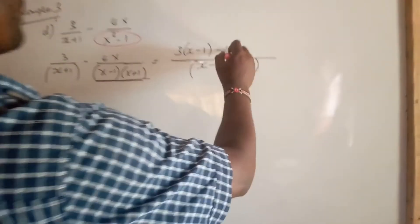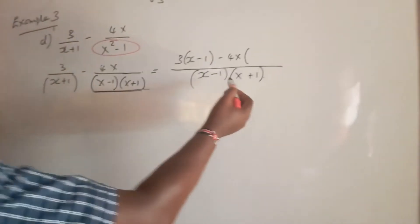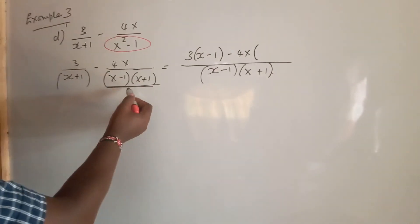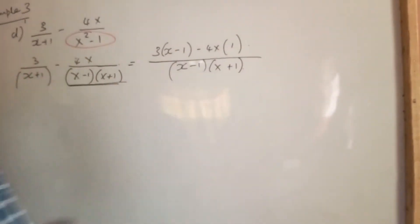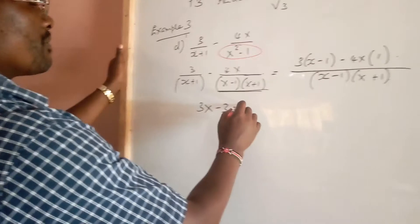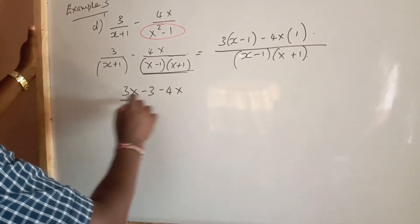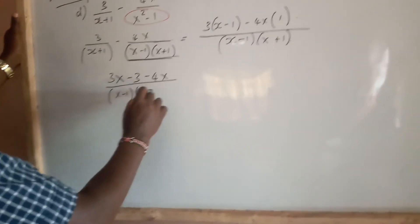Then you bring on 4x multiplied by this denominator divided by this divisor, which is obviously 1. Opening the brackets, you're going to have 3x - 3 - 4x, everything over (x-1)(x+1).